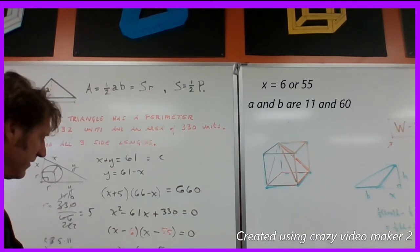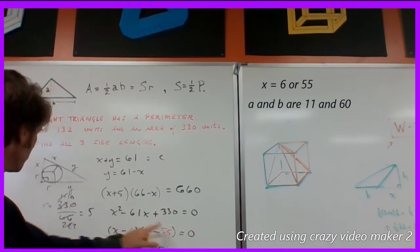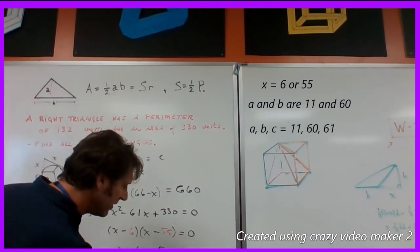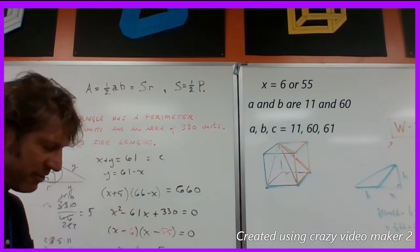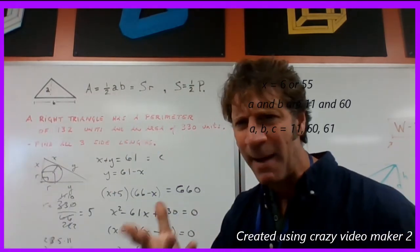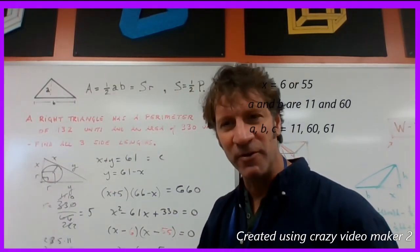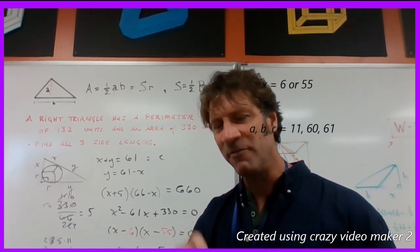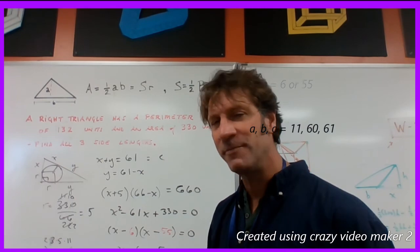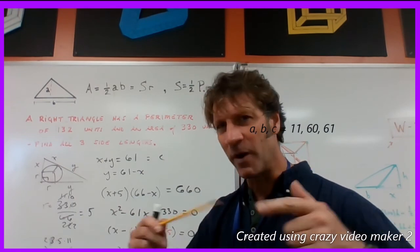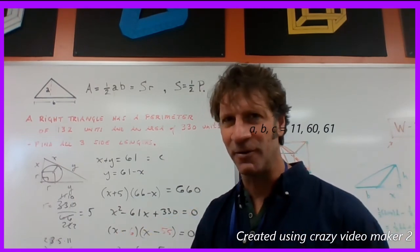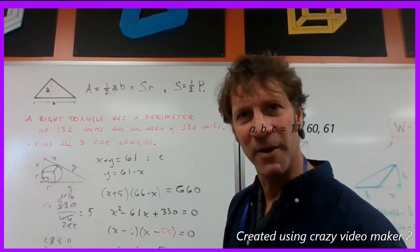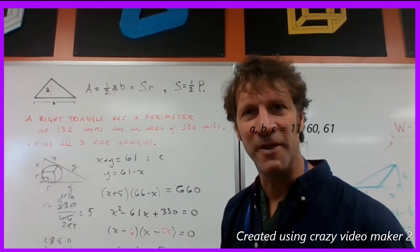And then the other one is this 55 that's here. And we have a 5 right here. And 55 plus 5 is 60. And this is an interesting one because you can see that this Pythagorean triple happens to be one of the type where it starts with an odd number. And the c and the b are one away from each other. And when b and c are one away from each other, you might recall that a squared plus b squared equals c squared. But it's also true that a squared equals b plus c. And 11 times 11 is 121. And that's what you get when you add those two legs together.